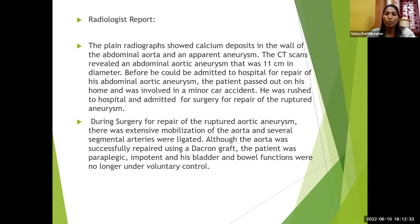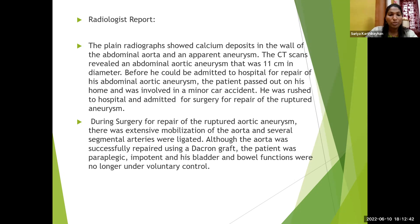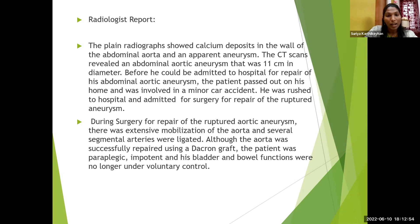It is a complicated case — an abdominal aortic aneurysm in an old man who is a chronic heavy drinker and smoker. The physician was advising the patient for abdominal aortic aneurysm repair. But before he could be admitted to the hospital for repair, the patient passed out at home. The aneurysm had ruptured — it underwent aneurysmal rupture.